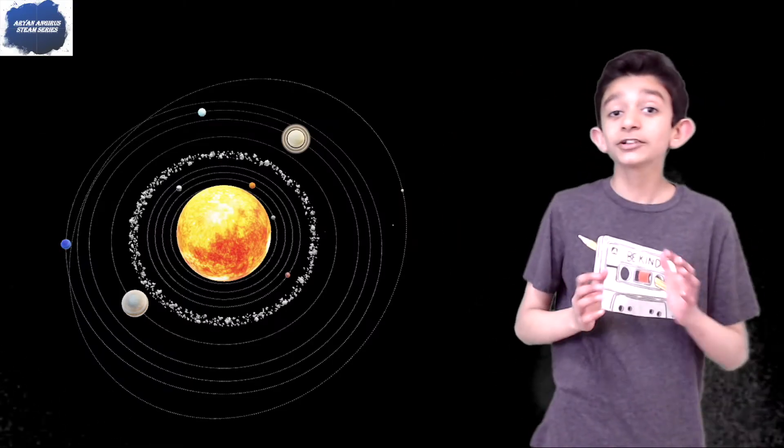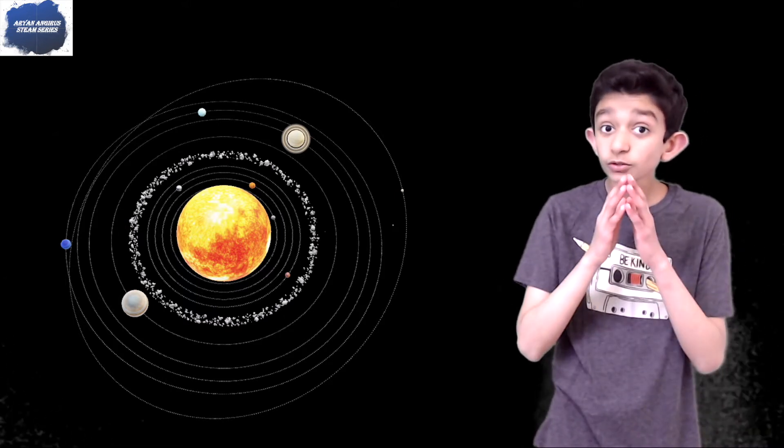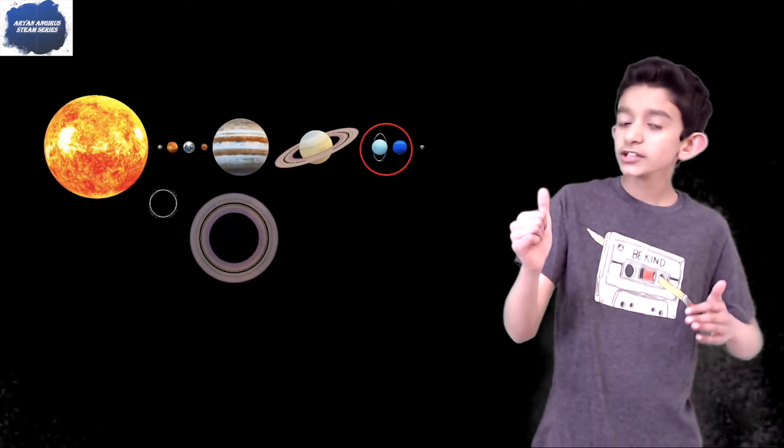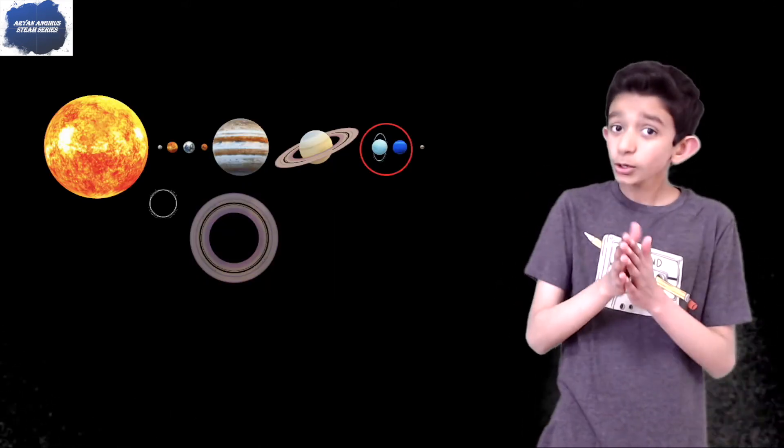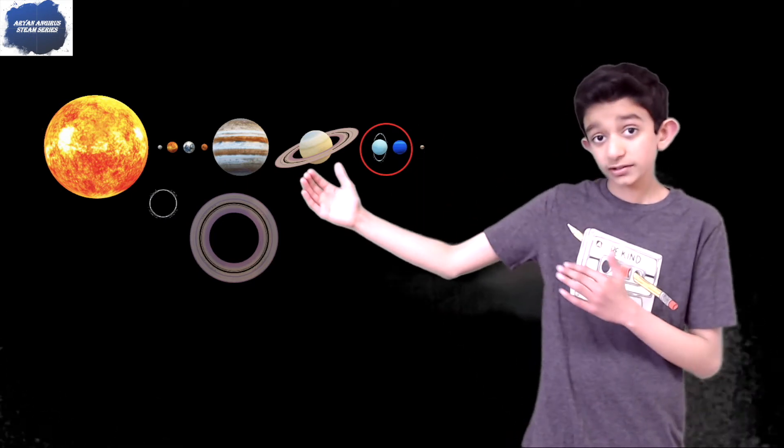Hey guys, welcome back to a Steam series. In today's video we'll be talking about the two farthest planets from the Sun, Uranus and Neptune. They're also the coldest planets from the Sun because they're the farthest.